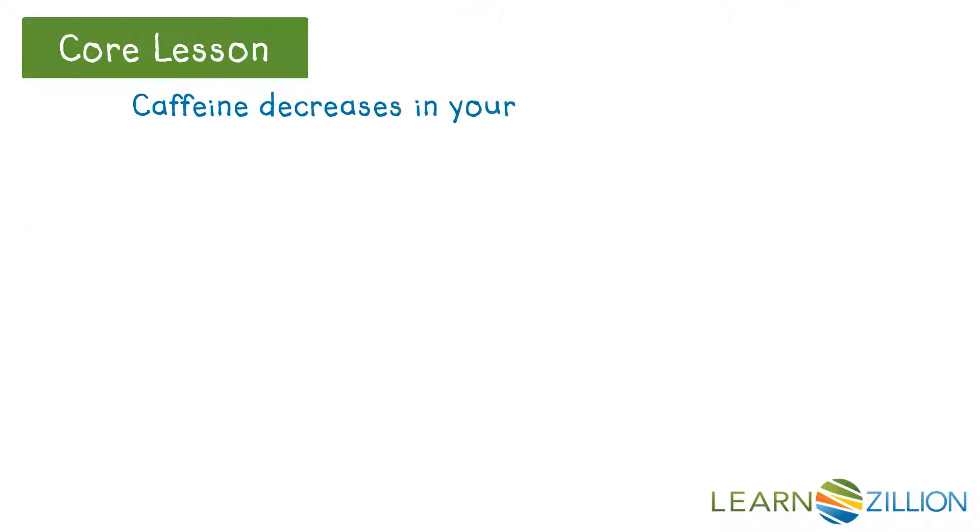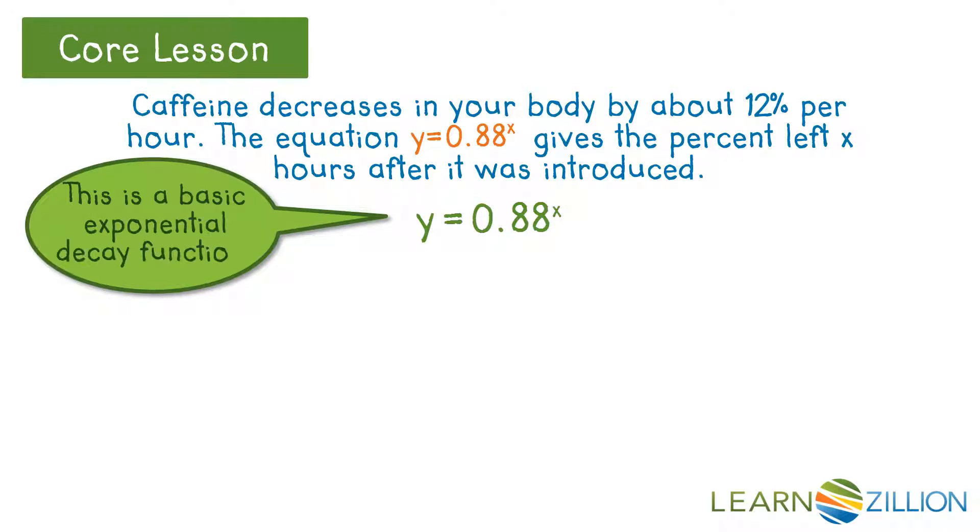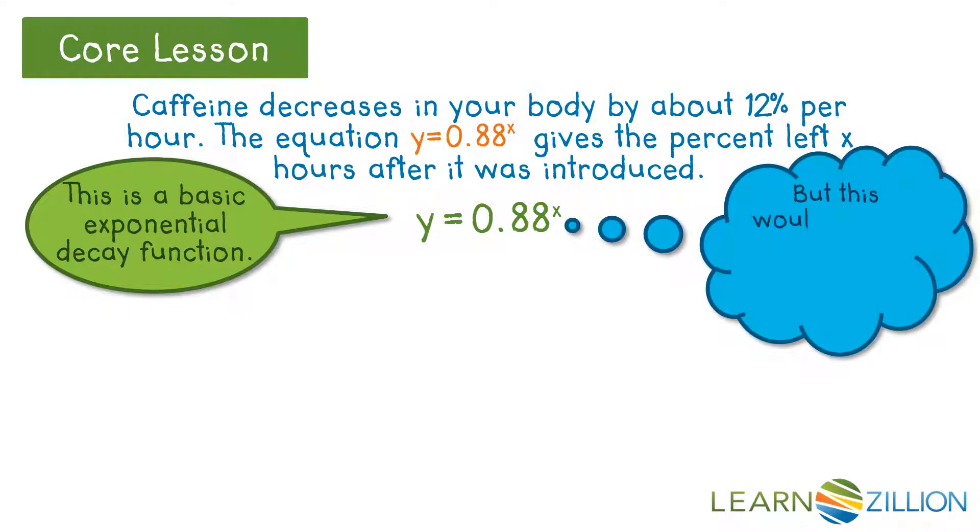If caffeine decreases in your body by about 12% per hour, the equation y equals 0.88 to the x gives the percent left x hours after it was introduced. This is a basic exponential decay model. But it wouldn't show the amount of caffeine in the body, just the percent left.